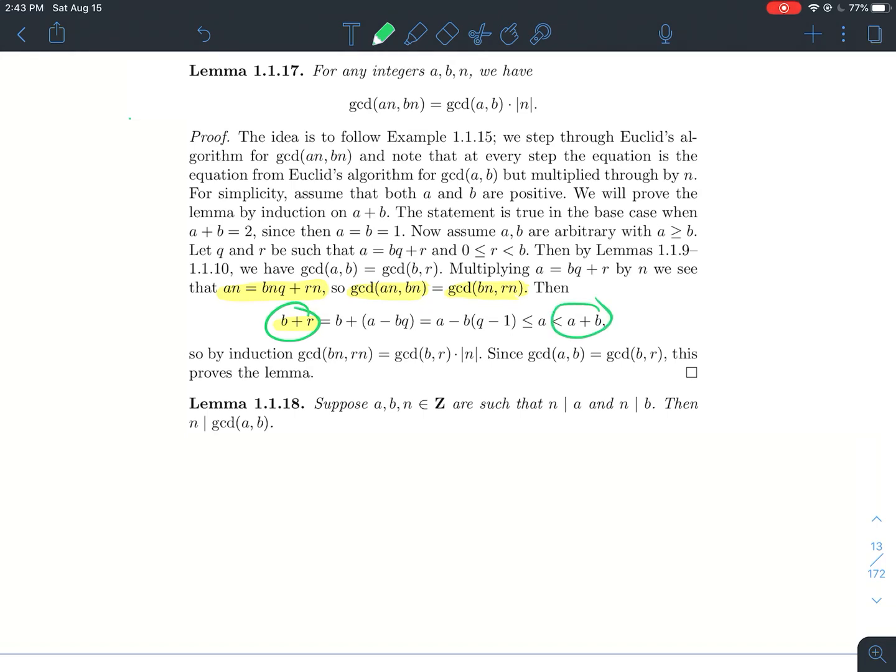So my inductive hypothesis, the statement is true, it applies to b plus r. So by our induction hypothesis, I should be able to factor this n out of the GCD of bn and rn. So the result is true as long as I'm less than a plus b. So what do we have then? We just saw that their GCDs are the same. Therefore, the GCD of br is the same thing as the GCD of a and b. And that's kind of the proof of the lemma.